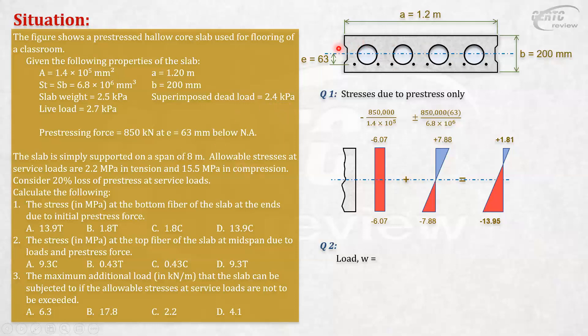To make it kilonewton per meter, we multiply it by the width of the slab, which in this case is 1.2 meters. The effective width is 1.2. So that will be 2.5 + 2.7 + 2.4 times 1.2 meters, which gives you 9.12 kilonewtons per linear meter along the length. Take note, the length is 8 meters.